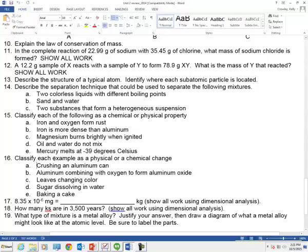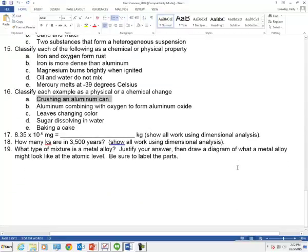Number 16. Classify each sample as a physical or chemical change. Crushing an aluminum can. Simple question. Is it still an aluminum can if it's crushed? Is it still made of aluminum? Yeah? That's a physical change. Part B. Aluminum combining with oxygen to form aluminum oxide. It sounds like it's making something new. Aluminum oxide. That would be a chemical change.